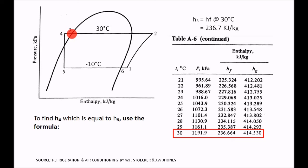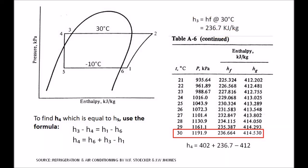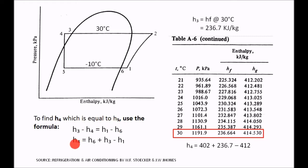To find H4, which equals H5: using the heat balance equation H3 minus H4 equals H1 minus H6, we derived earlier. Rearranging: H4 equals H6 plus H3 minus H1. Transferring terms: H4 is on one side, H1 and H6 on the other. So H3 from the table at 30 degrees Celsius is 236.7 kJ/kg — that is 236.664 rounded to one decimal place.